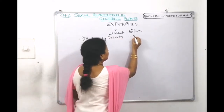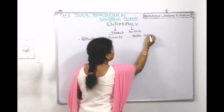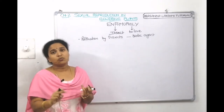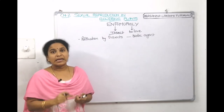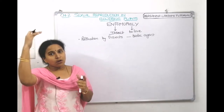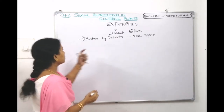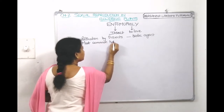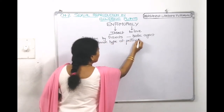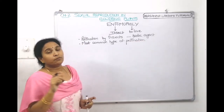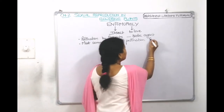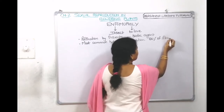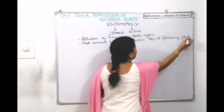Entomophily comes under biotic agents of pollination, and among all biotic agents this is the most common type. Different biotic agents include birds, ants, bats, snails, squirrels, and even snakes, but insect pollination is the most common. We can state that 80% of the flowering plants get pollinated by insects.